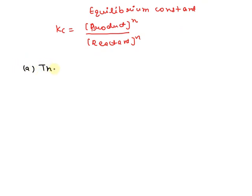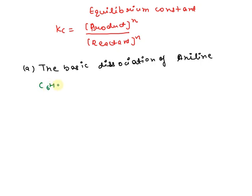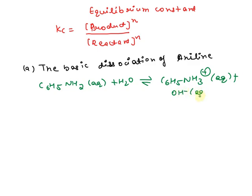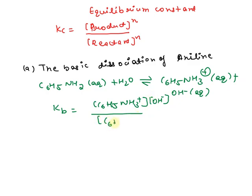In part A, we first write down the basic dissociation of aniline: C₆H₅NH₂ dissociates to form C₆H₅NH₃⁺ plus OH⁻. The Kb expression is the ratio of the concentration of the products upon the reactant. The Kb value here is 4.3 × 10⁻¹⁰.